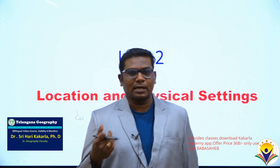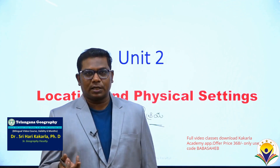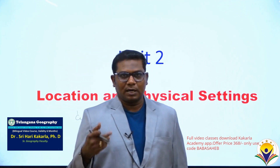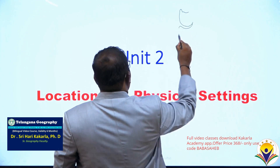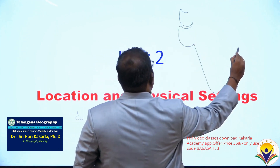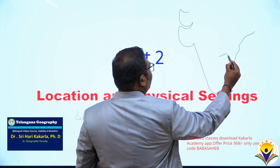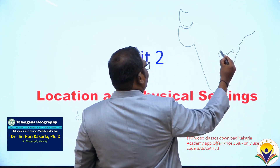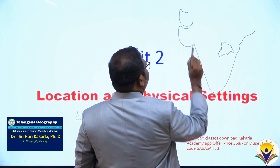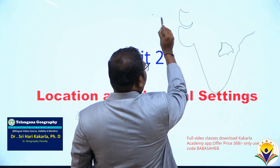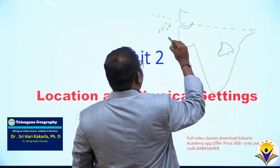India lo Telangana state is exactly where — latitude and longitudinal extent, border and districts, geographical area. Telangana has been located in the peninsular India. This is what the exact location of Telangana. Here, 23.5 degrees northern latitude — this is the Karkata Rekha.